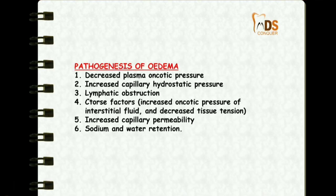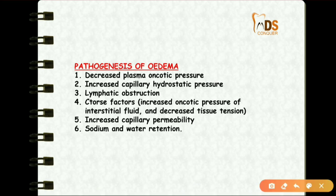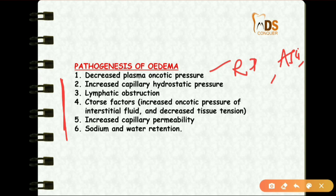Coming to the pathogenesis of edema, it may be due to six reasons. The first is decreased plasma oncotic pressure, which can be seen in edema in renal disease, ascites, liver disease, and edema due to hypoproteinemia.